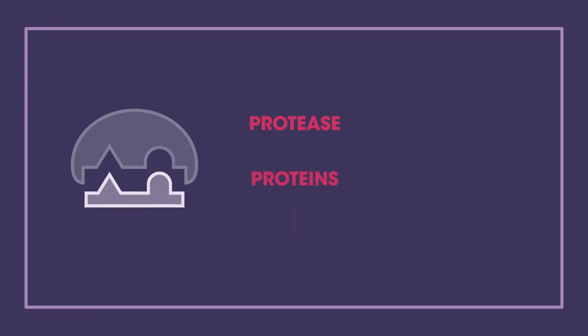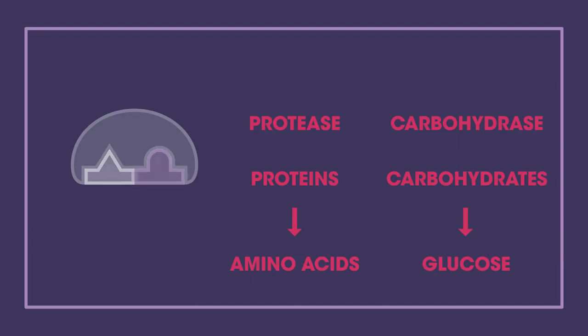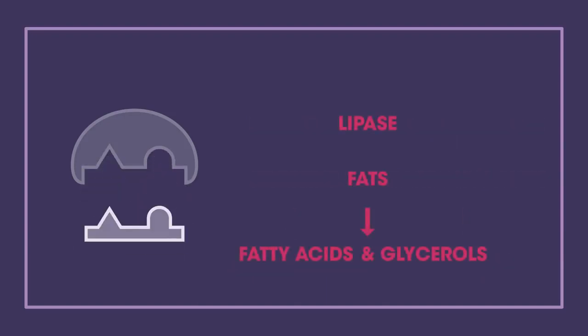In this example, the enzyme is breaking down the substrate into two smaller products. It could be protease, which breaks down proteins into amino acids, or carbohydrase, which breaks down carbohydrates into glucose, or lipase, which breaks down fats into fatty acids and glycerols.